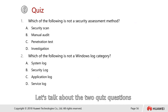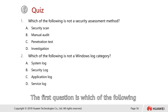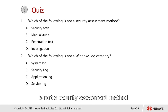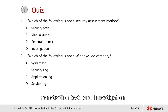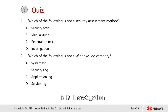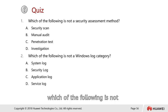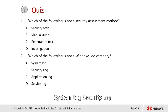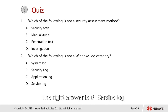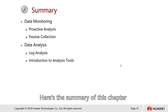We have two quiz questions to close the chapter. Question one: which of the following is not a security assessment method — security scan, manual audit, penetration test, or investigation? The answer is D — investigation. Question two: which of the following is not a Windows log category — system logs, security logs, application logs, or service logs? The correct answer is D — service logs.